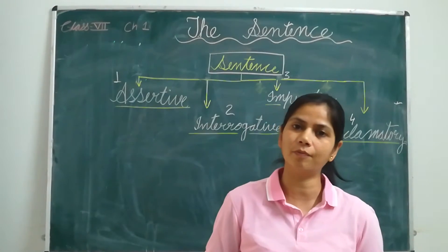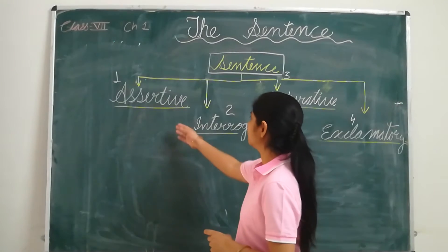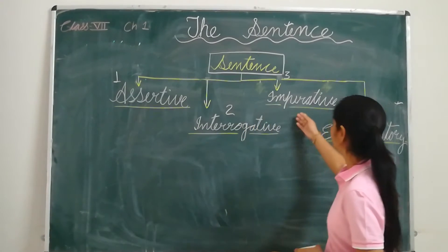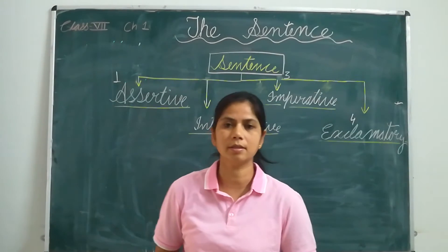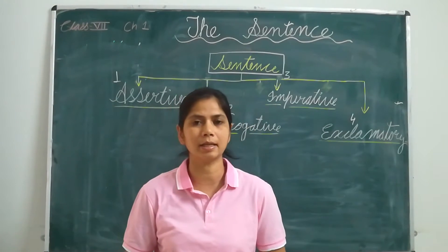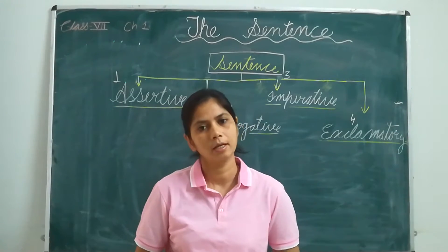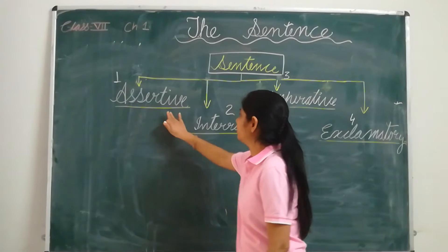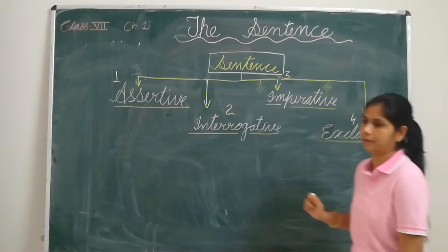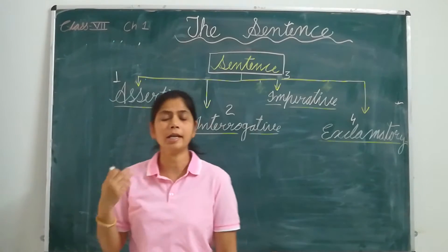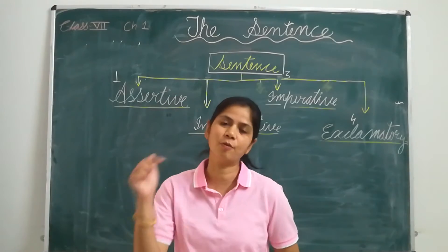We use different types of sentences. The sentences can be assertive, interrogative, imperative, or exclamatory. If we divide the sentences into major parts, we can divide them into four parts: first is assertive, second is interrogative, third is imperative, and the fourth one is exclamatory. We will study where, how, and how we structure them.